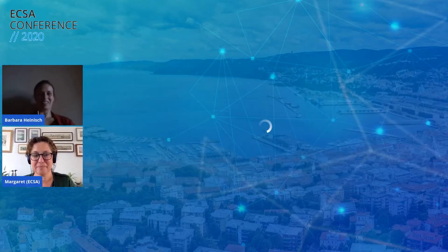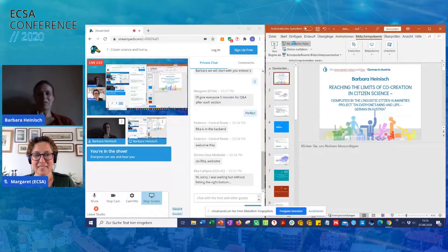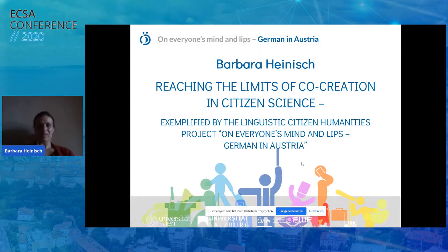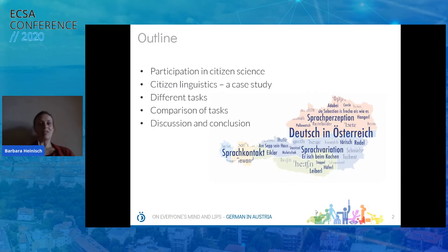Thank you very much. I'm going to share my screen now. I'm going to talk about the limits of co-creation in citizen science, and I will use our linguistic project entitled On Everyone's Mind and Lips, German in Austria, as an example. Here is the outline: I will briefly talk about participation in citizen science, then about citizen linguistics and our case study, the different tasks citizens can complete in citizen science projects, and finally the discussion and conclusion.